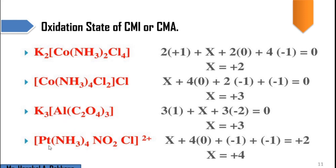The last example has platinum (Pt) as the metal. The calculation: X plus 4 × 0 plus 2 × (−1) for NO2 plus (−1) gives X − 2 = 0 initially, but since there is already a +2 charge on the complex, X − 2 + 2 = 0 becomes X = +4. So the oxidation state of platinum is +4. This is how we determine the oxidation state of the central metal ion or central metal atom.